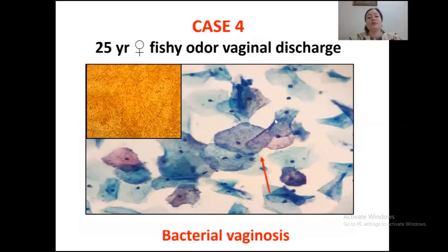Case four was a fishy odor vaginal discharge. In the center, many clue cells can be seen, with coccobacilli sticking onto the squamous epithelial cells, having resemblance to a shaggy appearance. The diagnosis was bacterial vaginosis.